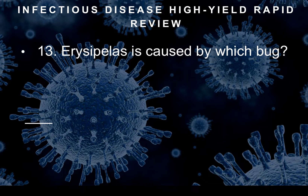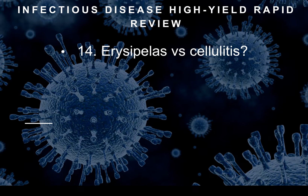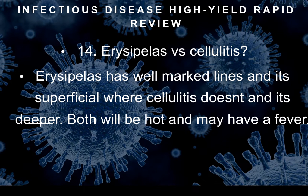Question eleven: Erysipelas is caused by which bug? Erysipelas is caused by group A strep — GAS. Question twelve: How do we differentiate erysipelas from cellulitis? Erysipelas will have well-marked lines and is superficial — it's on the skin. Cellulitis does not have marked lines and is deeper. Both will be hot and both may have fever. So: erysipelas is superficial, cellulitis is deep.